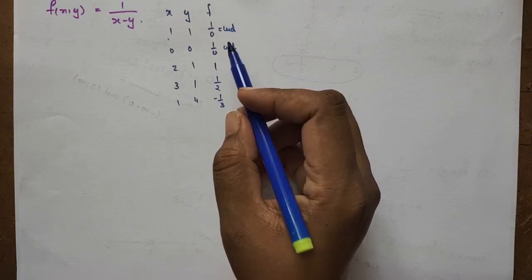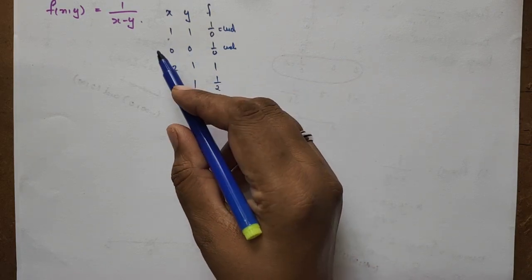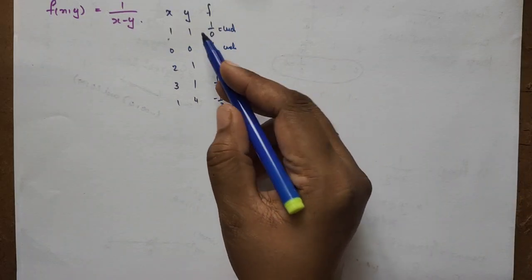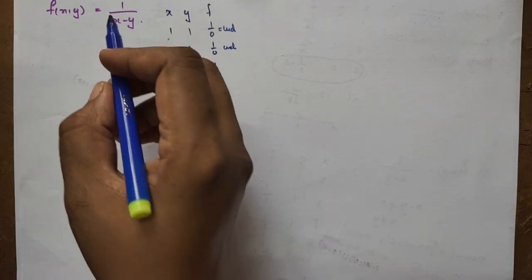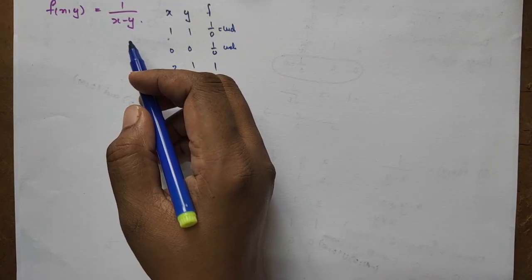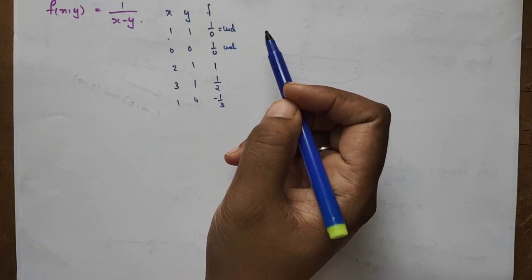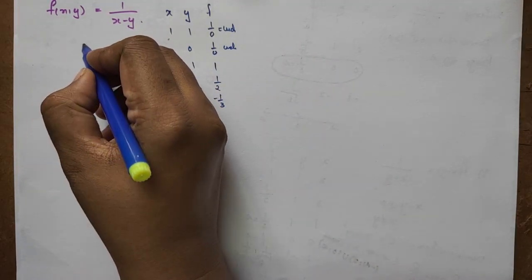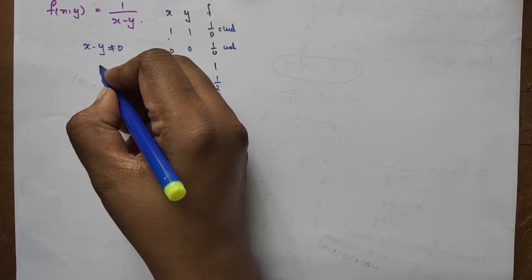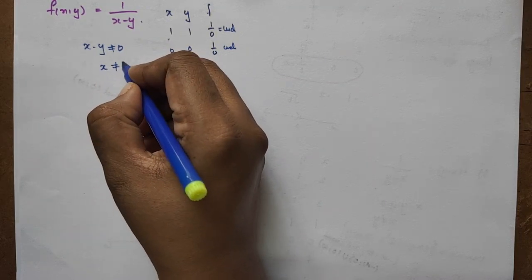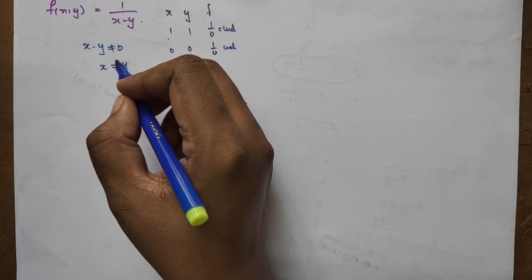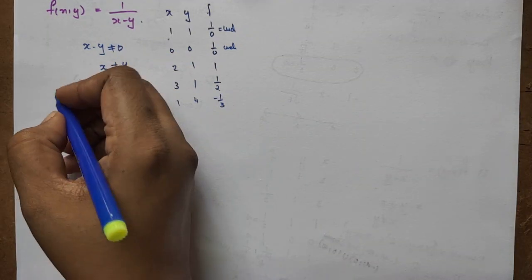The function is undefined whenever x equals y, because x − y = 0. The condition for the domain is that the denominator x − y must not equal 0, meaning x must not equal y.